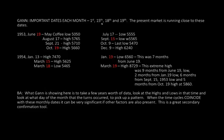GAN: important dates each month — 1st, 15th, 18th, and 19th. The present market is running close to these dates. This letter was written a few days after March 19, 1954, so the present market he's talking about is the March 19th extreme high. What he does here is he takes a list of just over a year and goes back, taking dates of important highs and lows, then looks at the monthly dates. I've highlighted in red when they match his four dates.